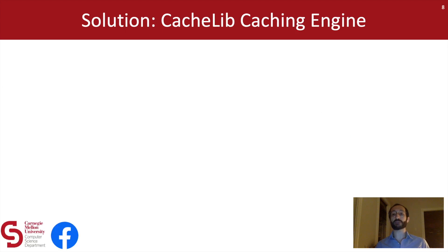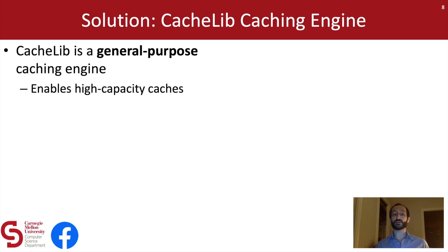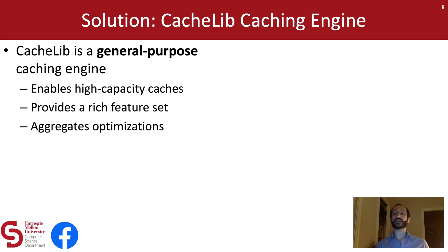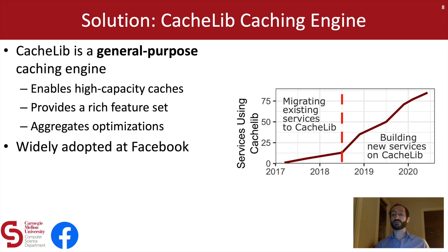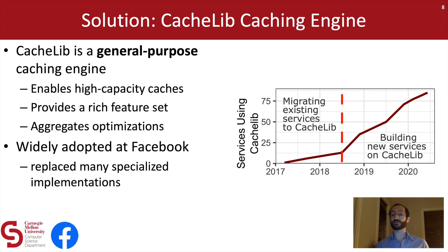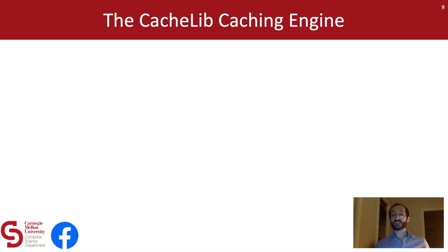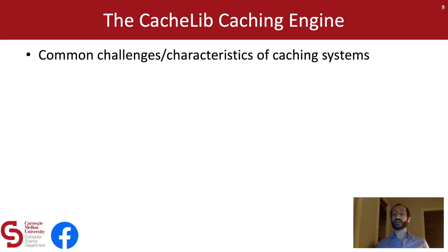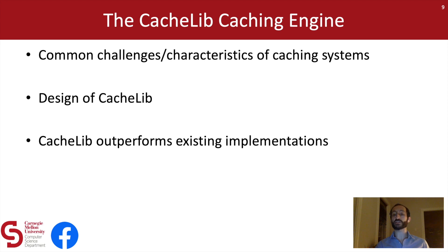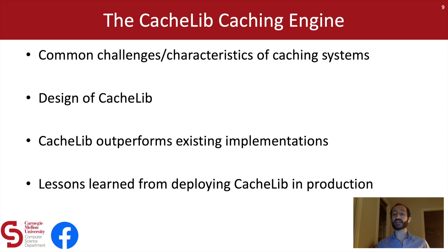So Facebook's solution to this problem is the CacheLib caching engine. CacheLib is a general-purpose caching engine which enables programmers to build high-capacity caches, and it provides a rich feature set of caching features. CacheLib also aggregates optimizations from across engineering teams, making it easier to see the uptake of new ideas for caching. CacheLib has been widely adopted at Facebook — it was first deployed in 2017, and for the first year or so, we migrated existing services to CacheLib. Since mid-2018, we've seen an explosive growth in the number of use cases using CacheLib at Facebook, and most importantly, CacheLib has replaced many of the specialized implementations I mentioned earlier.